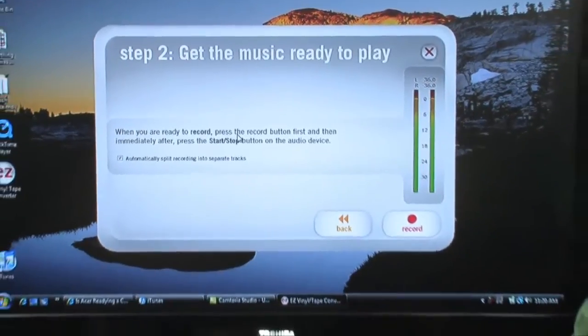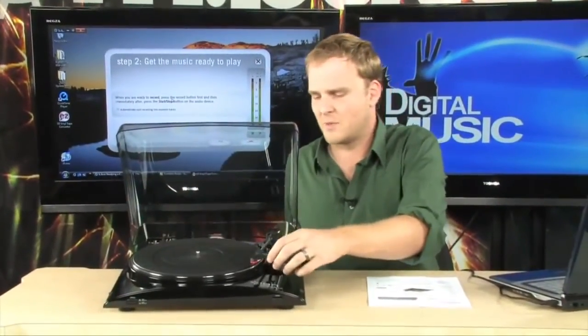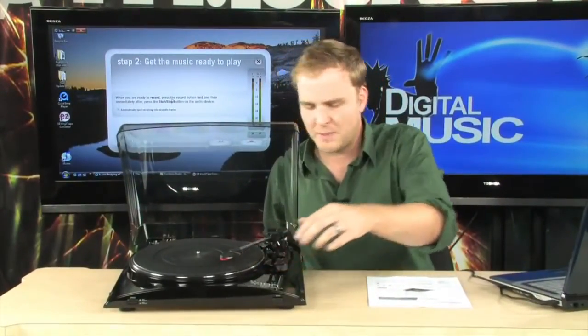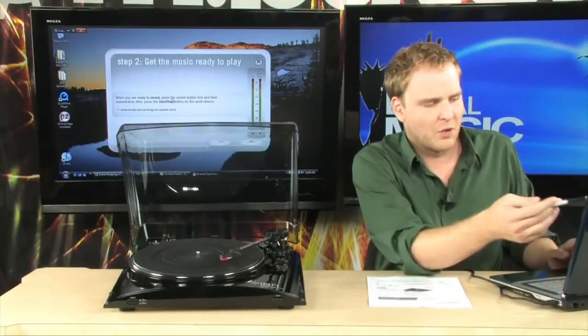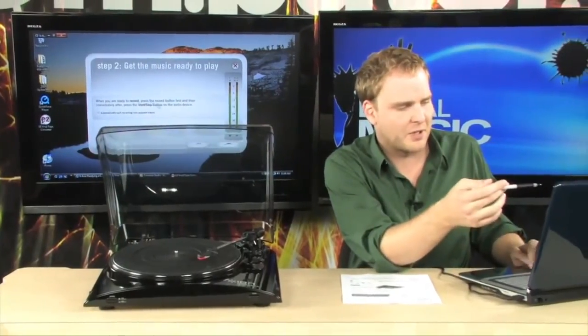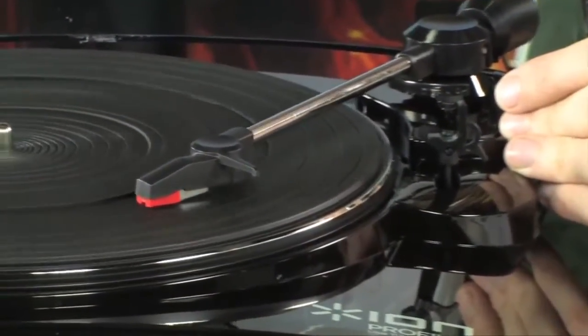Now, we don't actually have a record to record. So we're just going to record some noise here. Watch this. As we move this over, the turntable starts spinning. What it says is, when you're ready to record, press the record button first. And then immediately after, press the start-stop button. So we're going to go ahead and hit record and drop our needle down.